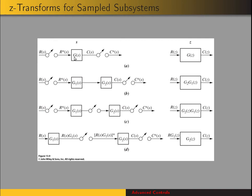You can look at that as G1 cascaded with G2, which is equivalent to G of S where G of S equals G1 times G2. So the Z-transform of this would just be G of Z, which is the Z-transform of G1 times G2.